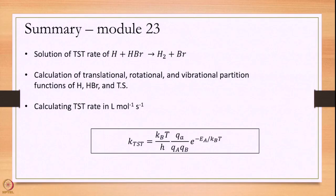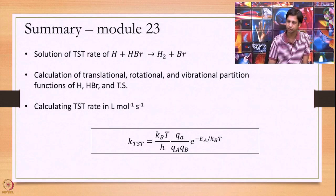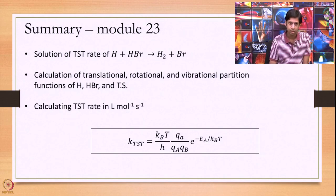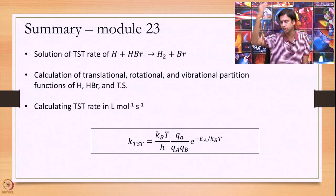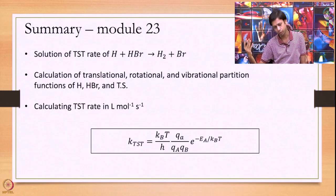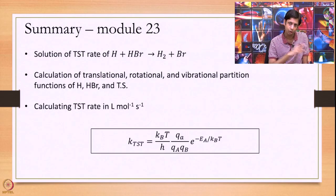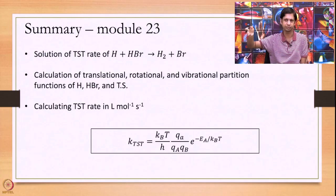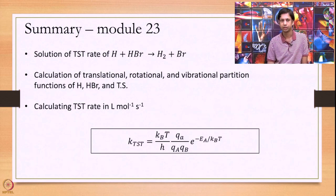We end here today. We have looked at an exact calculation for the specific example of H + HBr with a linear transition state. You can use the same procedure for any reaction to get a transition state rate estimate. The first step is always identifying the parameters needed: figure out whether structures are linear or non-linear, calculate the appropriate moments of inertia and frequencies — always remembering that for the transition state you require one frequency less — then plug into the formulas, being careful with units to get the final answer. Thank you very much.